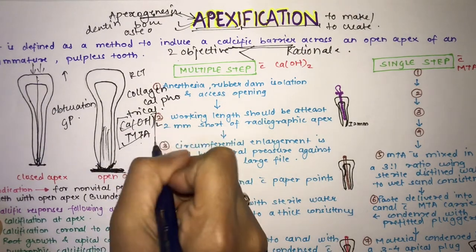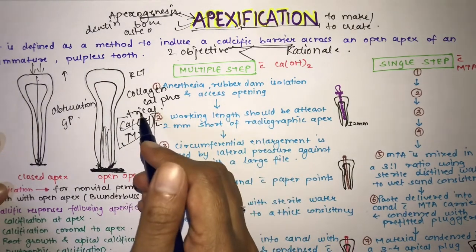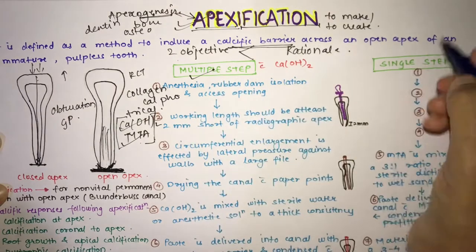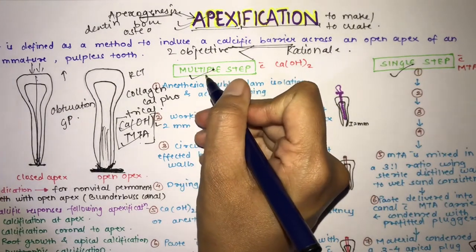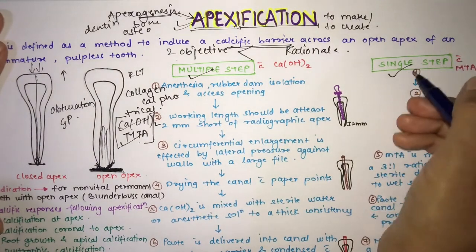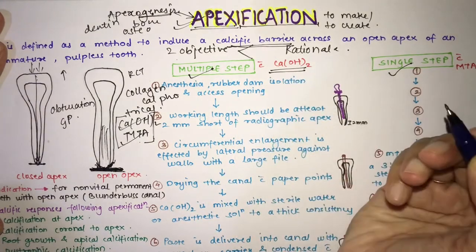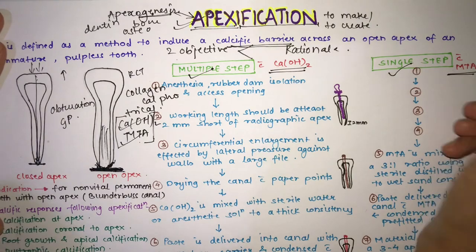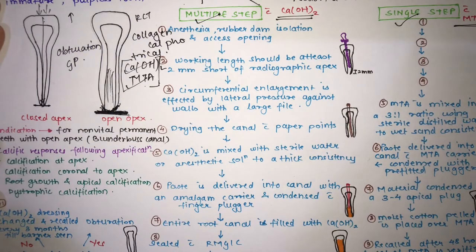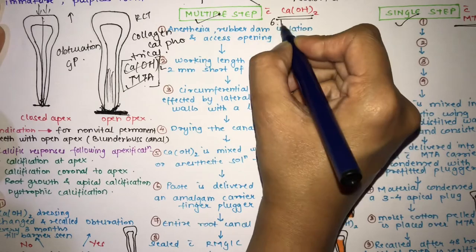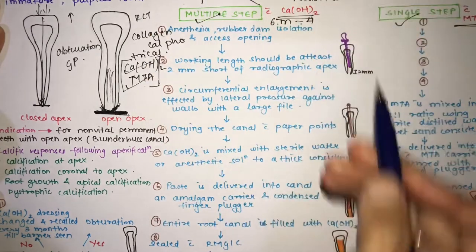There are two methods of doing apexification: multi-step and single-step. In multi-step, you recall the patient again and again; in single-step, the apexification is done at once. Multi-step is done with calcium hydroxide, and single-step is done with mineral trioxide aggregate. Calcium hydroxide is the most traditional material used, but the technique is multi-visit, taking around six months to four years to complete.